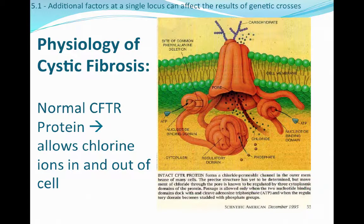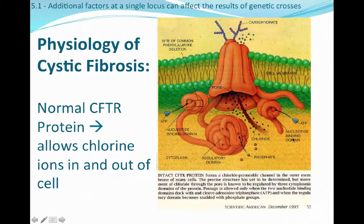Looking at the physiology of cystic fibrosis, a normal CFTR protein sits right in the middle of the lipid bilayer of the cell membrane. On the inside of the cell, there's a big arm of protein that acts as a plug or can open and let chloride in. A normally functioning CFTR protein allows chloride ions to come into and go out of the cell, which is key for cellular metabolism and function.